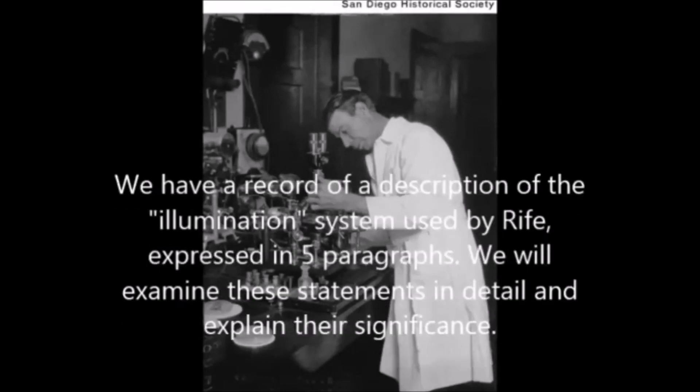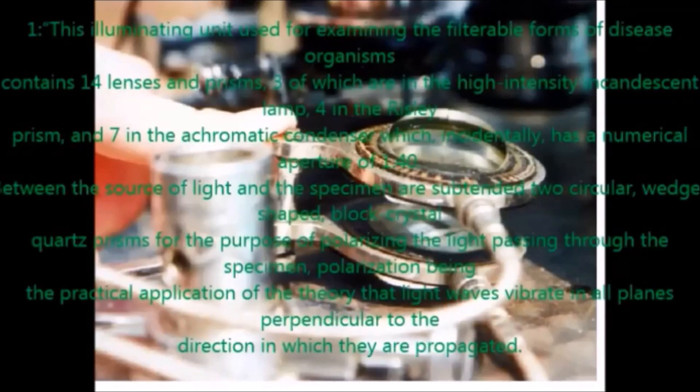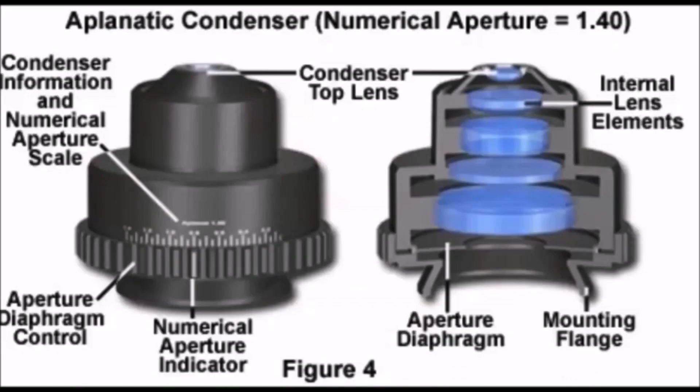We have a record of a description of the illumination system used by Rife, expressed in five paragraphs. We will examine these statements in detail and explain their significance. Rife says in paragraph 1, the illuminating unit used for examining the filterable forms of disease organisms contains 14 lenses and prisms, three of which are in the high-intensity incandescent lamp, four in the Risley prisms, and seven in the achromatic condenser.